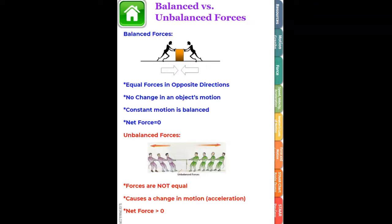Now, unbalanced forces are any other net force besides zero. It could be 0.25 and still be unbalanced. This is going to cause some sort of change in the object's motion that we call an acceleration. Maybe the object is going to speed up, maybe it's going to slow down, maybe it's going to change direction.